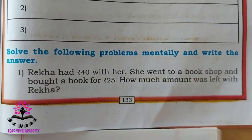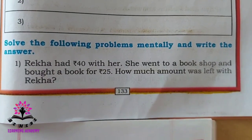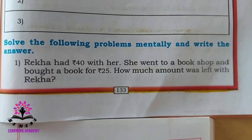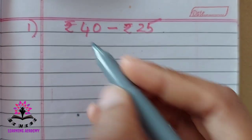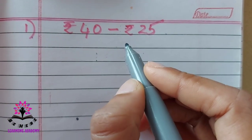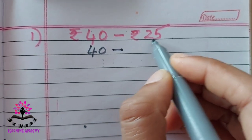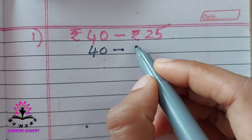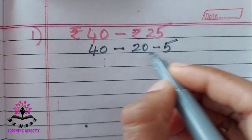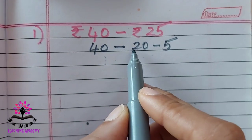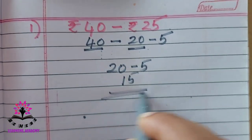Solve the following problems mentally. Rekha had Rs. 40 with her. She went to a book shop and bought a book for Rs. 25. How much amount was left with Rekha? So, 40 minus 25: write 40 as it is, minus 20 plus 5, which is 25. Subtract 40 minus 20 first: answer is 20. Then minus 5 is 15. The answer is 15.